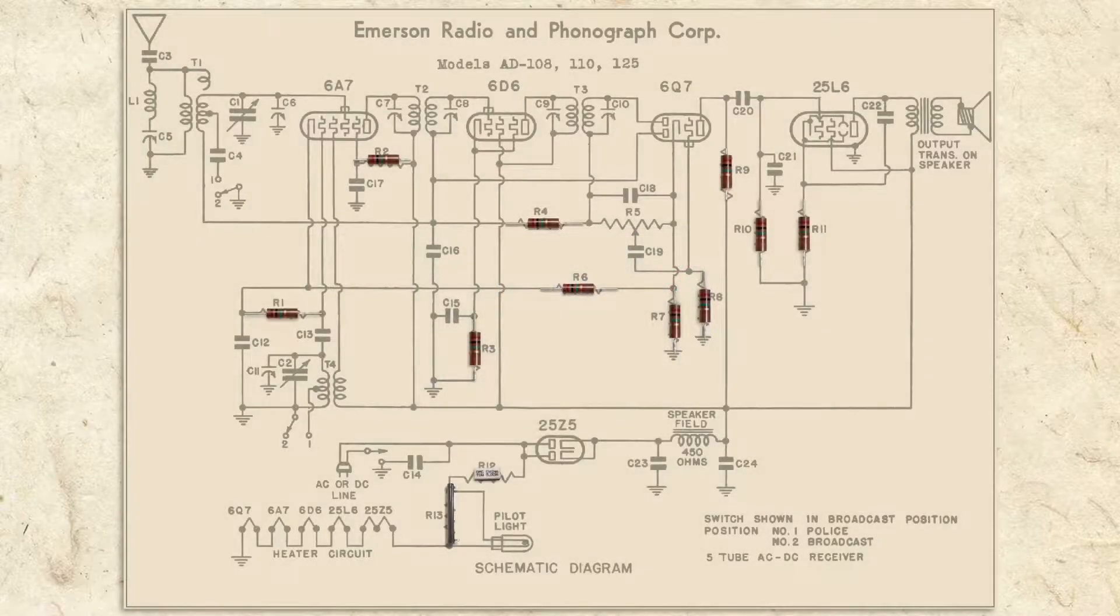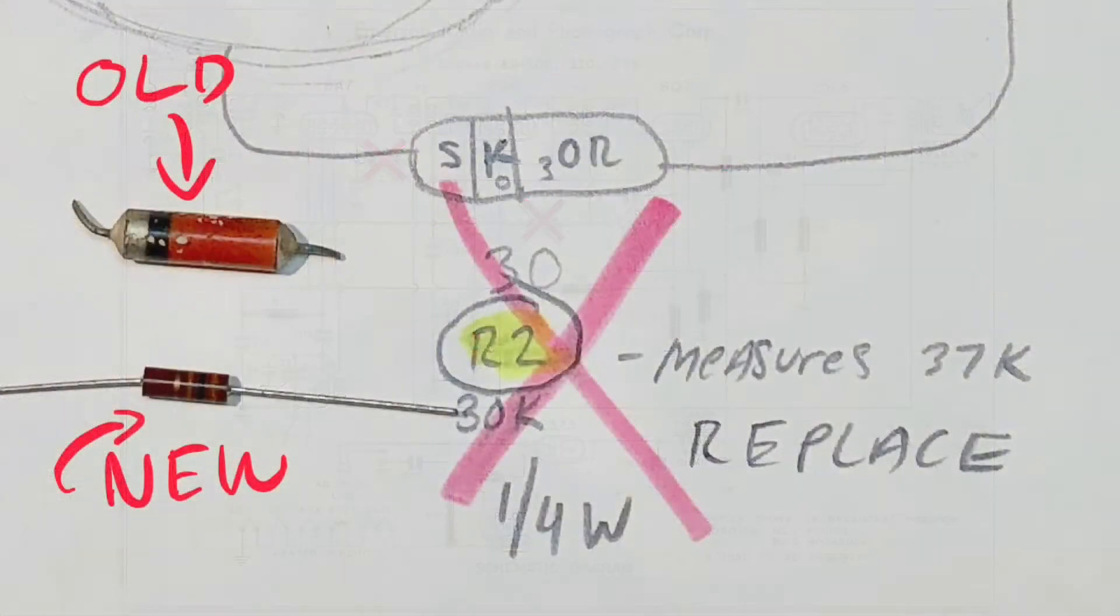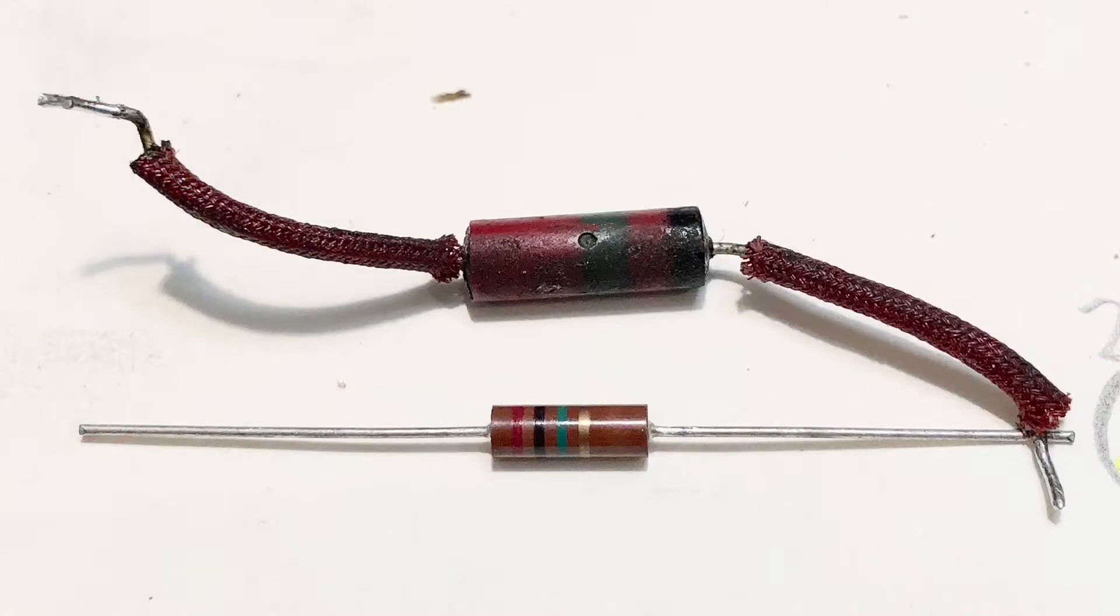After testing the resistors in our old Emerson, I found that two were bad. This one measured 37,000 ohms, but was supposed to be 30,000. And this one was supposed to be 2 mega ohms, but measured 2 and a half. The old resistor is on top, and the modern replacement is below.